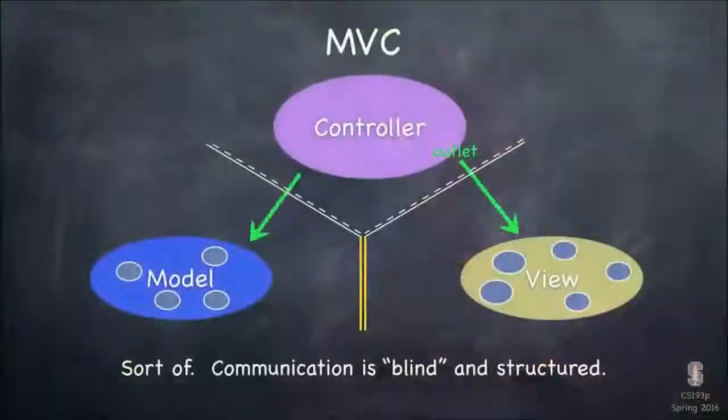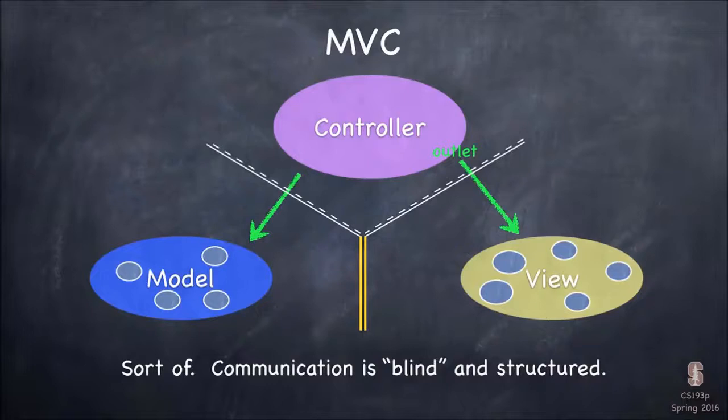So there's limited communication between the view and the controller. But of course the view needs to talk to the controller because it's the controller's minions and things happen in the UI and needs to tell the controller what's going on. So the kind of communication we have there has to be blind and structured. Blind meaning the object in the view don't know what class they're talking to, because buttons don't know anything about calculator view controllers. And it's structured because since there is no knowledge of the objects on either end, they have to communicate in a well-defined, predefined way.